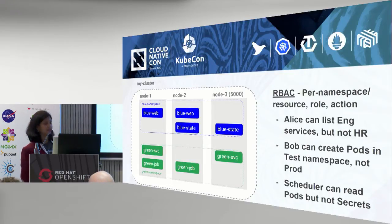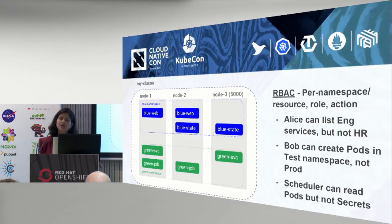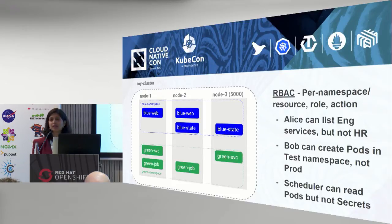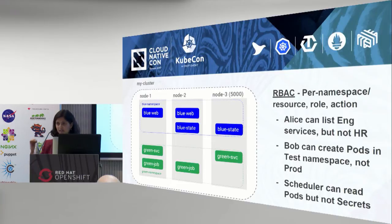With role-based access control, you can isolate into namespaces — here we show the workloads of the blue team in a blue namespace and the workloads of the green team in a green namespace. On a per-namespace, per-resource basis, you can set which roles have what actions over what resources. For example: Alice has a user role and can list — view permissions — Eng services, but not HR services. Service is a type of resource, and Eng and HR are namespaces. So she can view services in the Eng namespace but not in the HR namespace.